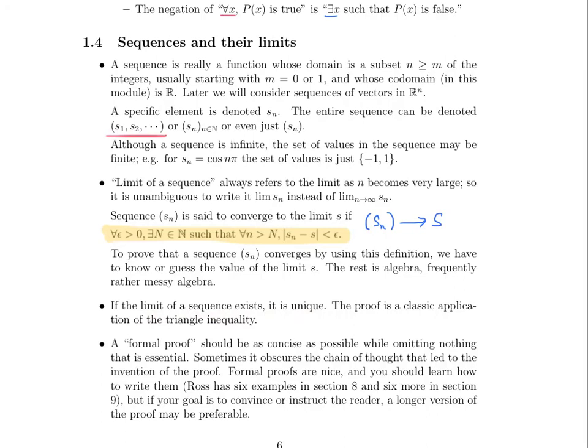A formal proof should be as concise as possible. This is a little bit of a note about people writing proofs for the first time. So it should be as concise as possible while omitting nothing that is essential. Sometimes it obscures the chain of thought that led to the invention of the proof. I like that it says formal proofs are nice and you should learn how to write them. He has six examples in section eight and six more in section nine. But if your goal is to convince or instruct the reader, you'll need a longer version of the proof and that's going to be more preferable.